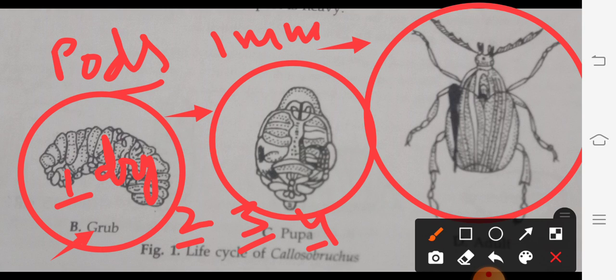The fourth one is that the grain should be mixed with neem seed kernel. So neem, which is Azadirachta indica, can save it from the insect pest.